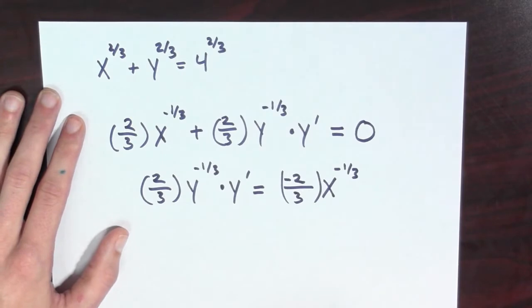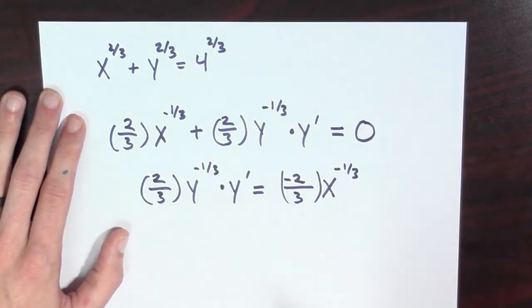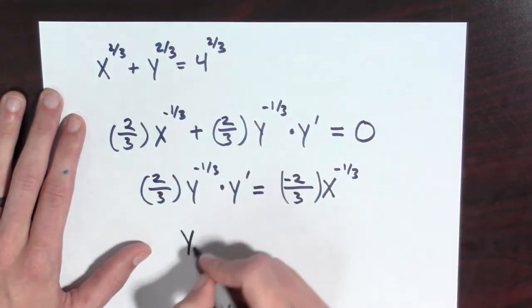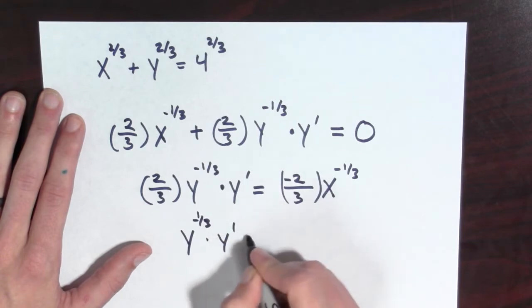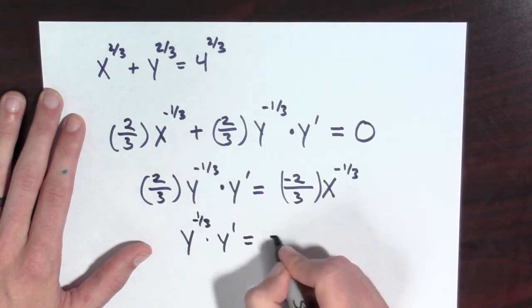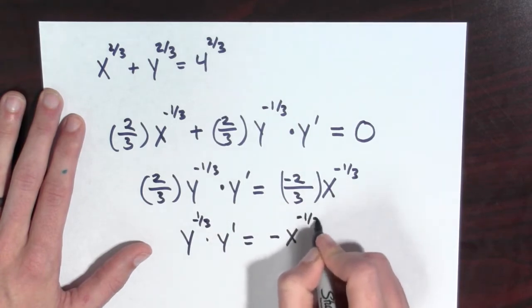Aha! And now since I have a factor of 2/3 on both sides, I can divide through by this and I get y^(-1/3) · y' = -x^(-1/3).